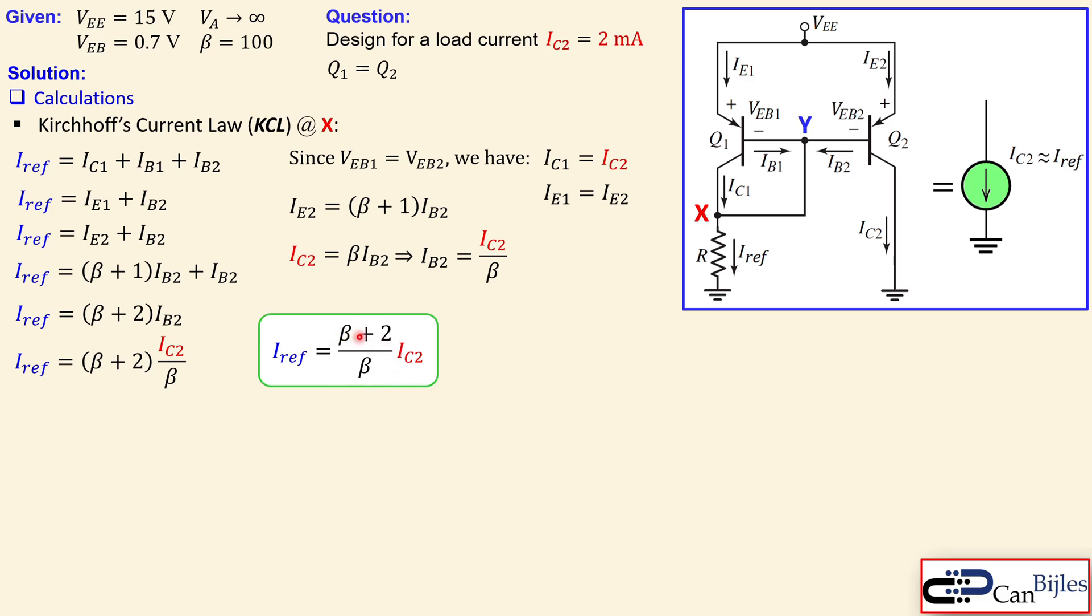And this fraction here, beta plus 2 over beta, is very close to 1, where if you have a beta, which is a large number. And that's why we have here IC2 is approximately equal to IRF.